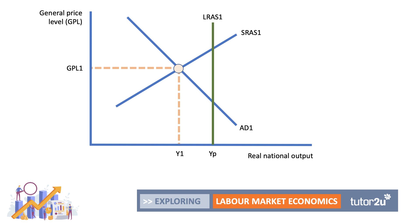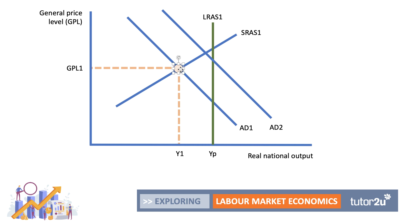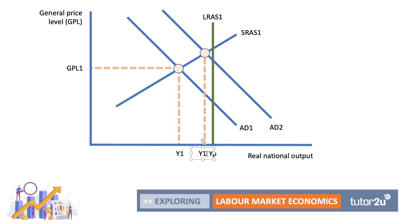For analysis diagrams, you could use an AD/AS framework. An increase in migration increases aggregate demand, shifting the curve to AD2, raising equilibrium GDP from Y1 toward Y2 — a higher level of national output. However, that could also cause a rise in the price level, so there's a risk of higher inflation if there's a very high level of migration.